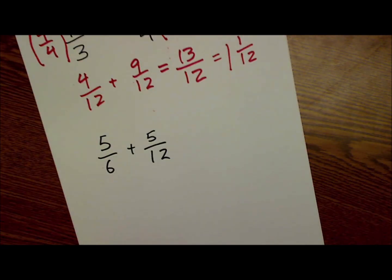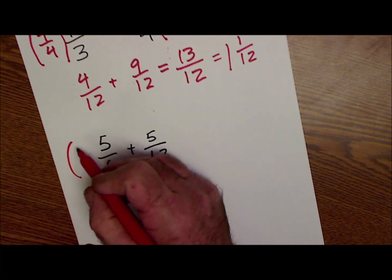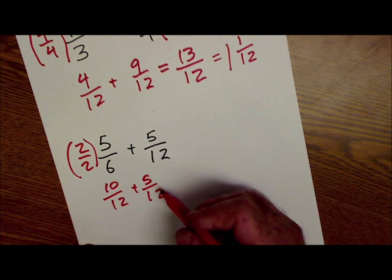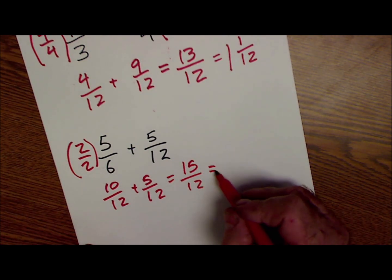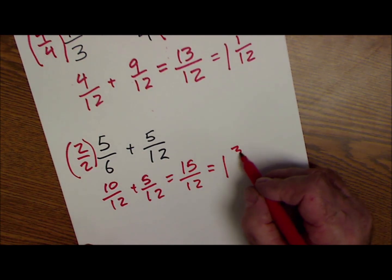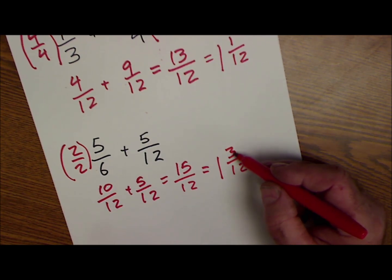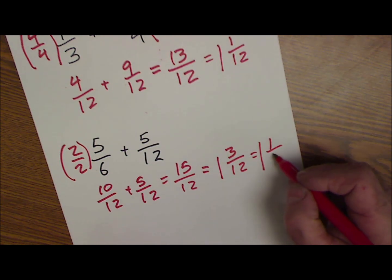Go ahead and pause the video right here and try and do that problem. Okay, bottom number is going to have to be 12. This one's already out of 12. This one I have to multiply by 2 over 2. That's going to give me 10-twelfths plus 5-twelfths or 15-twelfths. 12 goes into 15 one time with three left over. And then this could be reduced. Three goes into three one time. Three goes into 12 four times. So it's one and one-quarter.